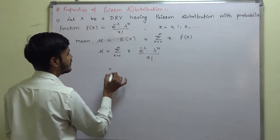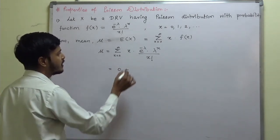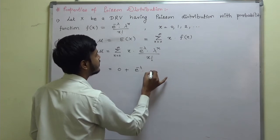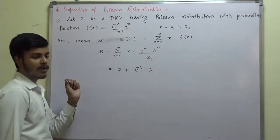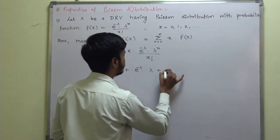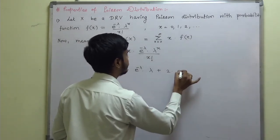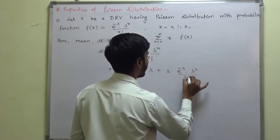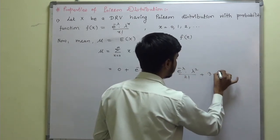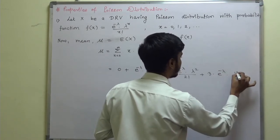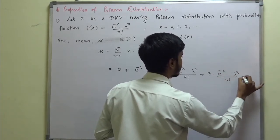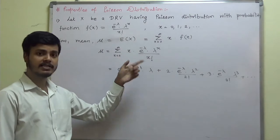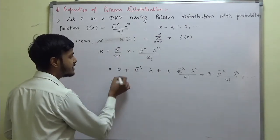We can just apply the summation and substitute the values of x. Put x = 0: the term is 0. Put x = 1: this is 1 · e^(−λ) · λ / 1!. Put x = 2: this is 2 · e^(−λ) · λ² / 2!, and so on. Just substituting the values of x: 0, 1, 2 and so on.